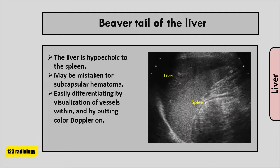In some conditions, the left lobe of the liver can get large and wrap around the spleen — this is called beaver tail. Because the liver is hypoechoic relative to the spleen, it may sometimes be mistaken for a subcapsular hematoma. This can be easily differentiated by visualization of vessels within the liver and by applying color Doppler.